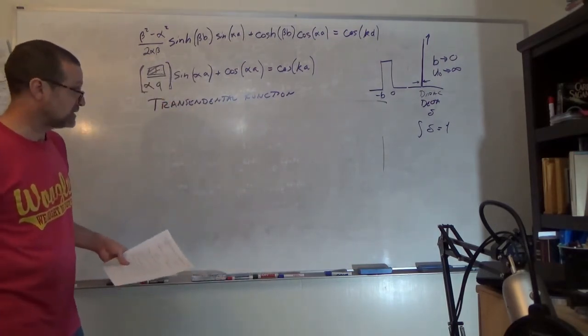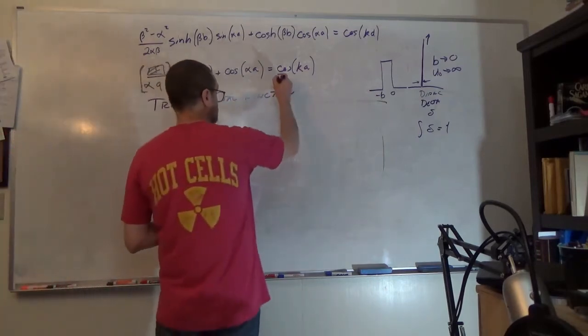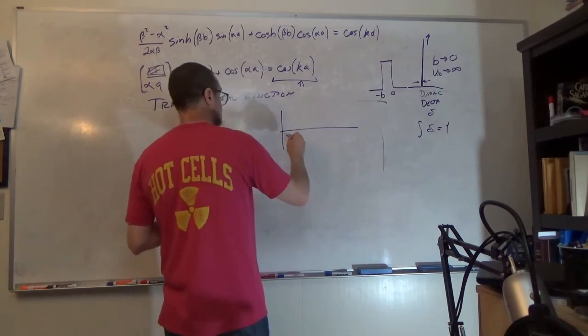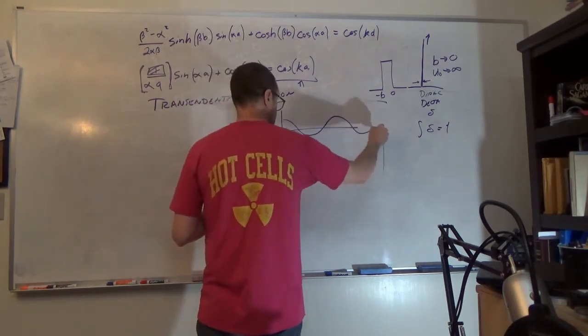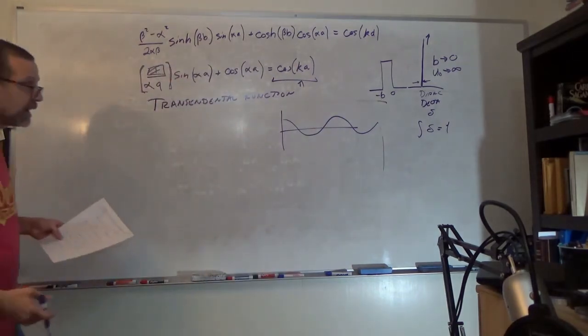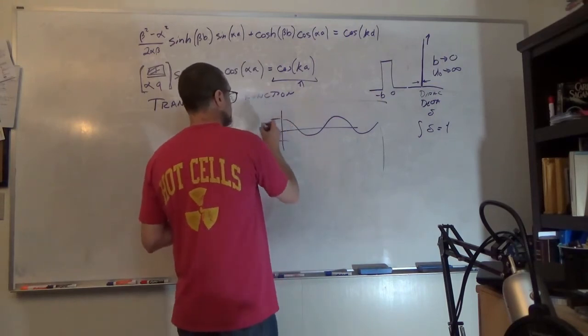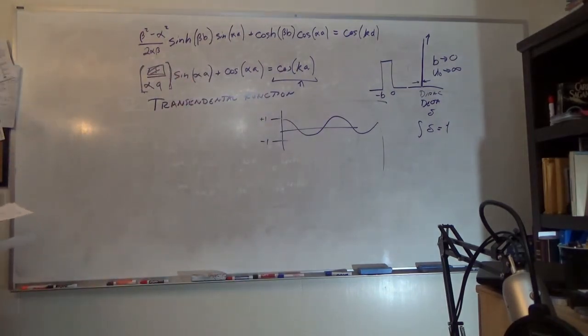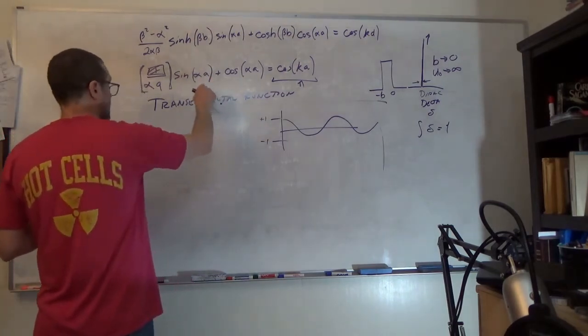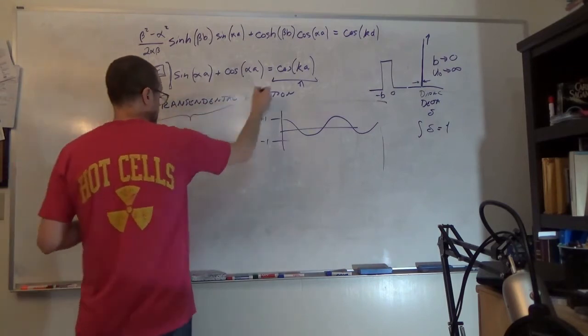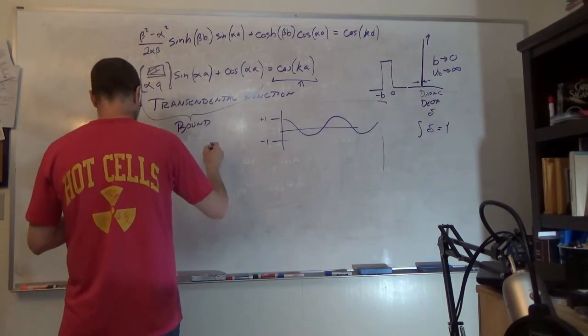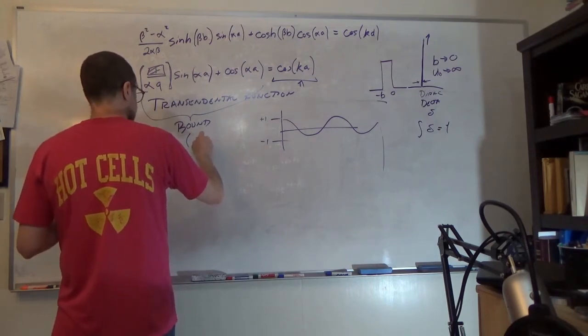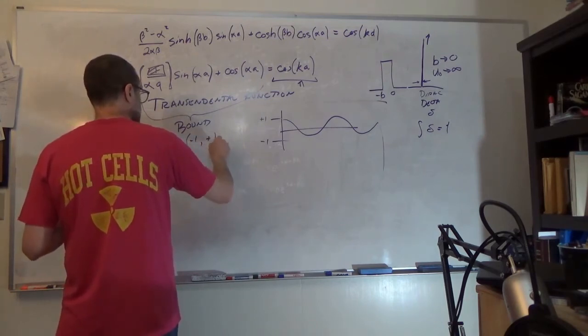But what we can do is we can graphically interpret the results. In this case, the graphical interpretation is going to be not that difficult, because our interpretation comes about from looking at this right-hand side. This right-hand side, if you look at it, it's going to do this. And it doesn't matter what you pick for k or for a. It's going to be bound from plus 1 to minus 1, because it's a cosine function.